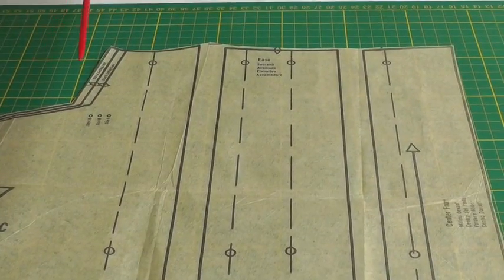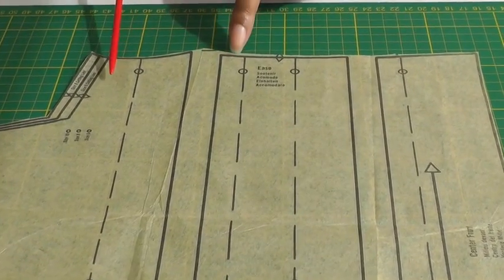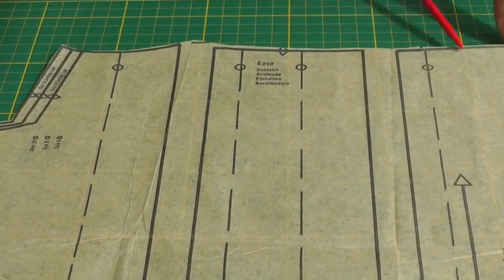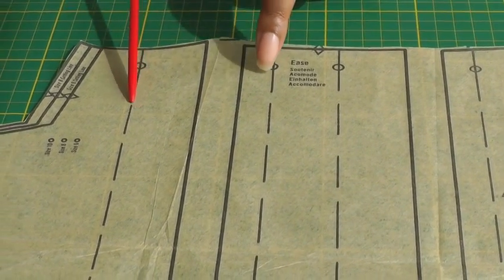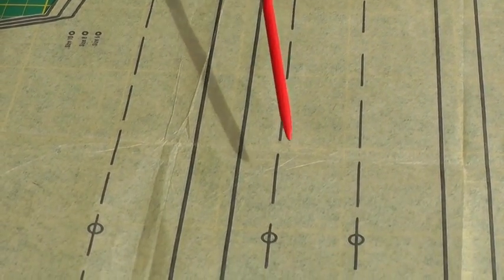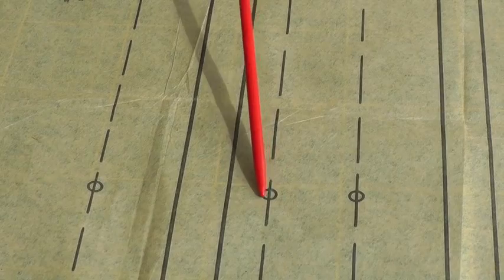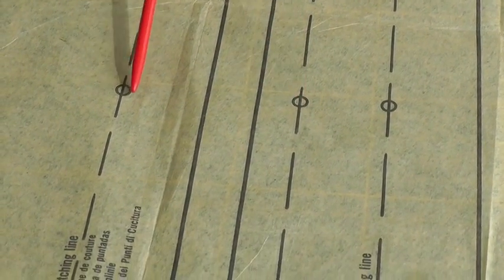Here is another example of a pleat. Now this time it's along the waistline so you don't get that much of a peak. And again we've got the parallel lines and we've got the circles to indicate that you need to match one to the other.